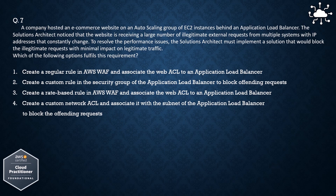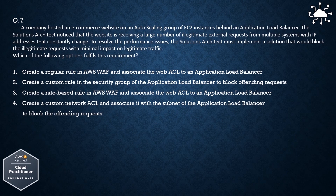Option 1: Create a regular rule in AWS WAF and associate the WebACL to an application load balancer. Option 2: Create a custom rule in the security group of the application load balancer to block offending requests. Option 3: Create a rate-based rule in AWS WAF and associate the WebACL to an application load balancer. Option 4: Create a custom network ACL and associate it with the subnet of the application load balancer to block offending requests. The correct answer is: create a rate-based rule in AWS WAF and associate the WebACL to an application load balancer.